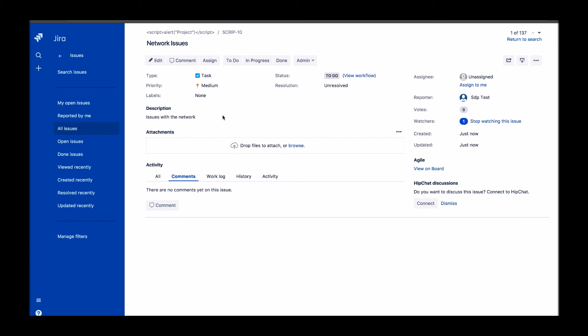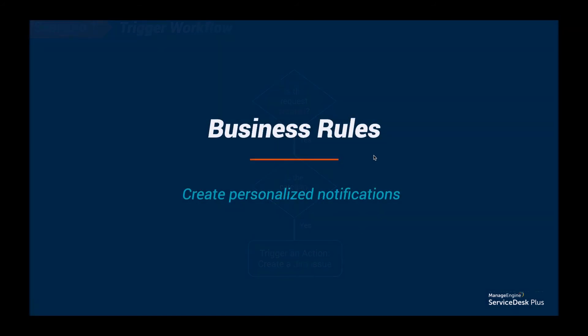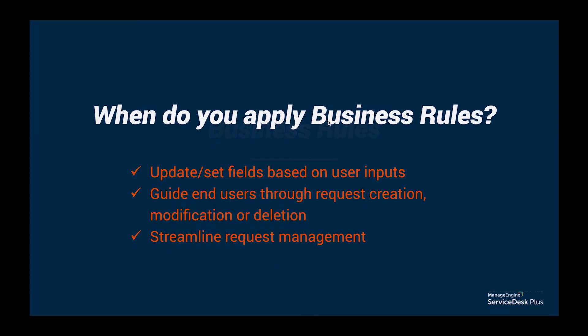We've successfully shown how a ticket related to network is raised as an issue in Jira based on the trigger condition. Integrating with third-party products like this is so much easier now. You can have conditions so that all your tickets are integrated with other products based on your business workflow. The next feature I'd like to talk about is our enhanced business rules. Business rules help in organizing and classifying incoming tickets.